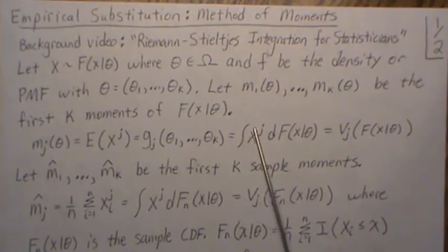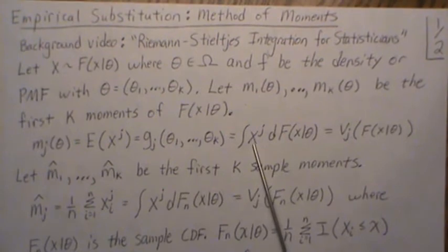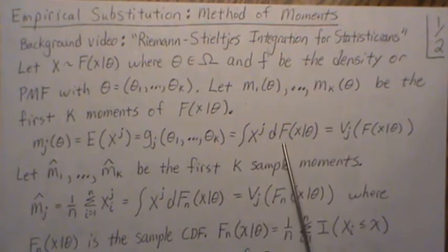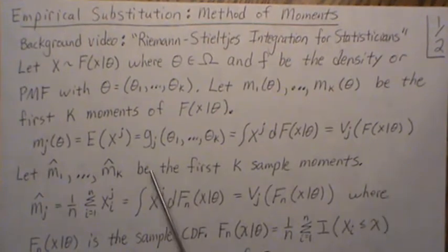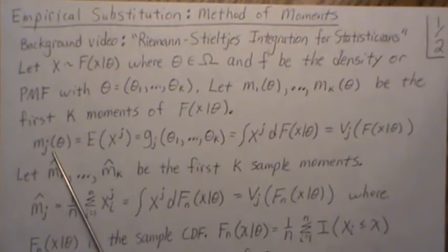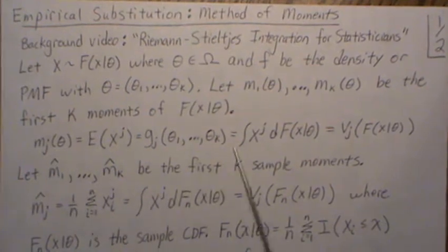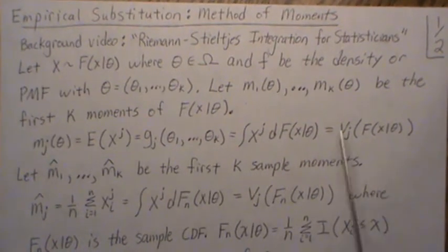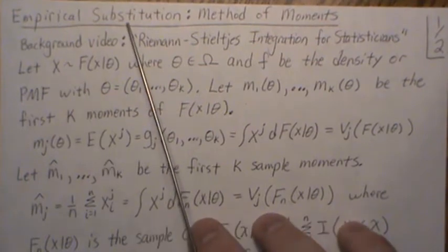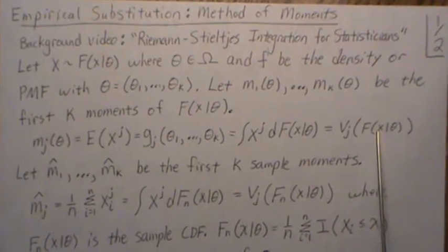The x is the dummy variable for this integration—it could be t or y or w. The unknown is f, so really this is a function of the CDF. The jth moment is a function of the CDF. This plays a part in what's called empirical substitution, which we'll get to briefly.